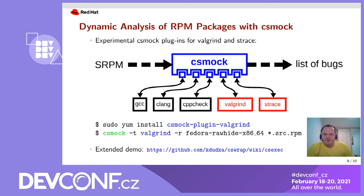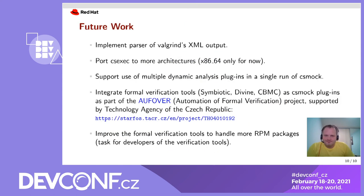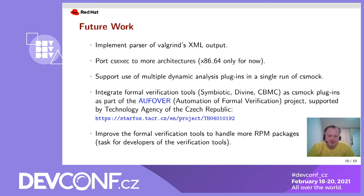There is a more detailed demo available at the URL shown if you are interested. Although the presented solution works fine, there is still some room for improvement. There is a work-in-progress patch for csdiff to parse Valgrind XML output. The goal is to present Valgrind results in a similar way as we present the results of static analyzers — developers are used to reports pinned to source code rather than PID-oriented reports about processes that no longer exist. We could also port csexec to more architectures. For now, csexec runs on 64-bit Intel only. It is not yet supported to use multiple dynamic analyzers in a single run of csmock.